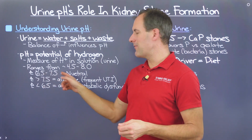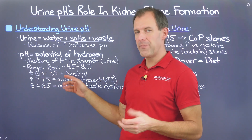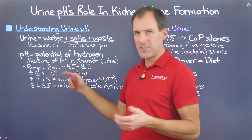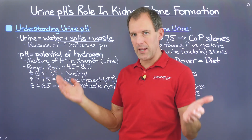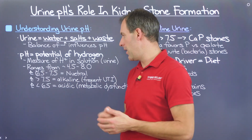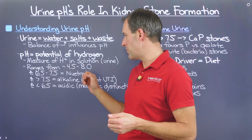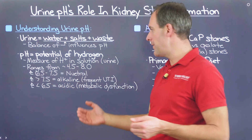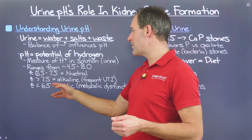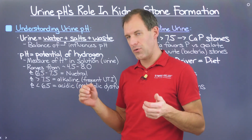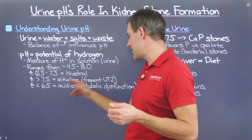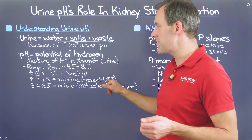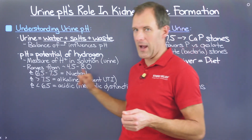In general, 6.5 to 7.5 is considered neutral, with 7 usually labeled as the midpoint. Anything over 7.5 is generally regarded as alkaline, and anything under 6.5 is generally regarded as acidic. Persistently acidic urine is generally a sign of metabolic dysfunction, so it's something to keep an eye out for.